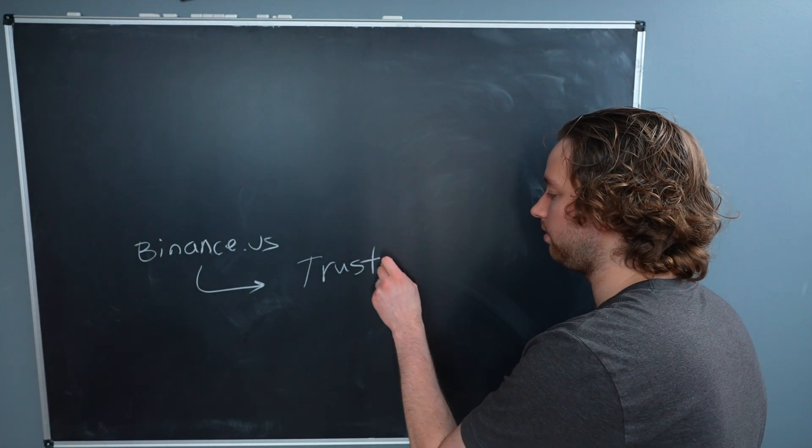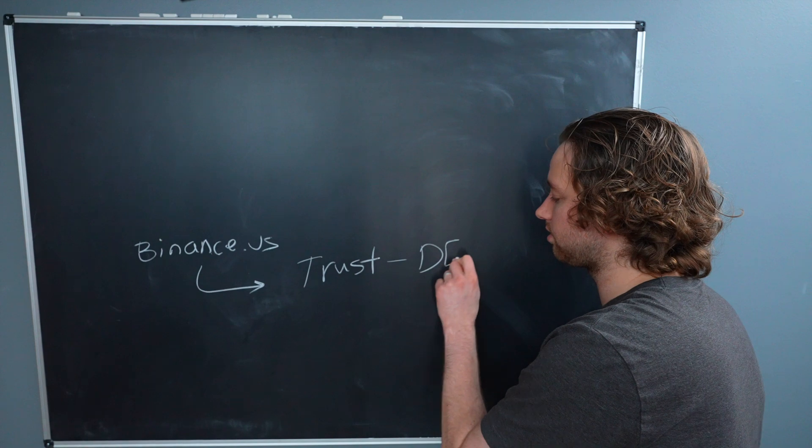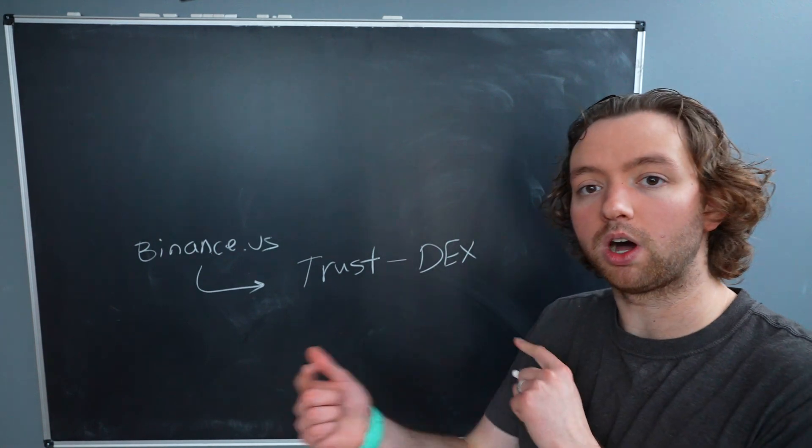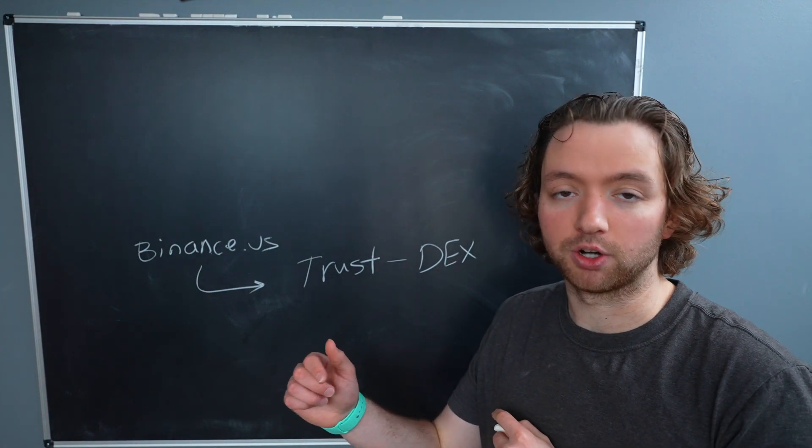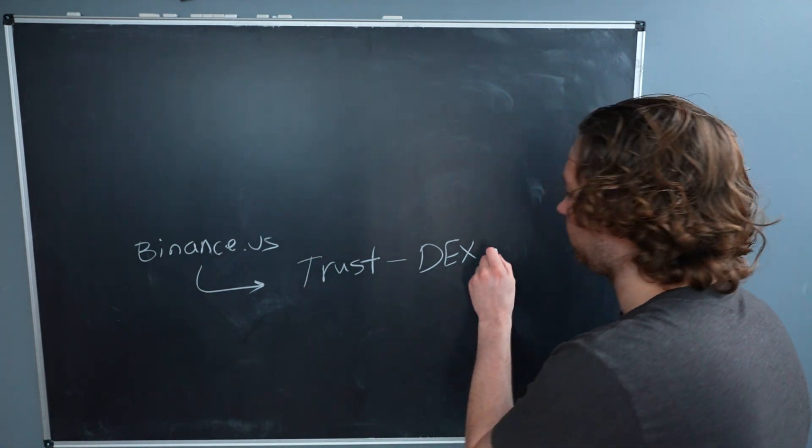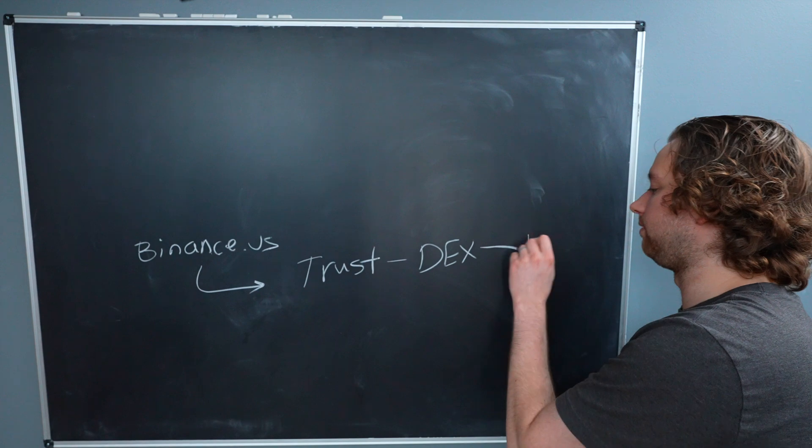Then you can send this to a wallet on your phone called the Trust Wallet. And in here, there's a decentralized exchange where you can swap from the original BNB to Binance Smart Chain BNB.